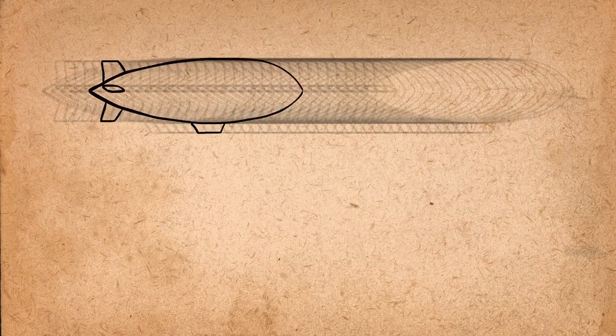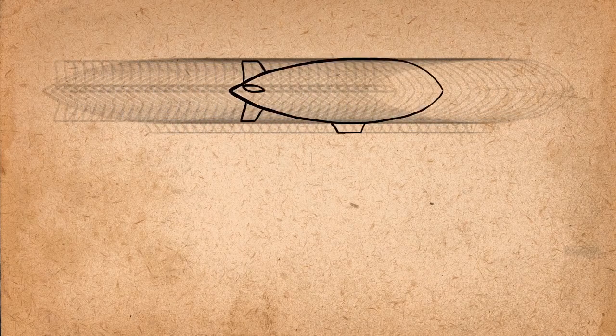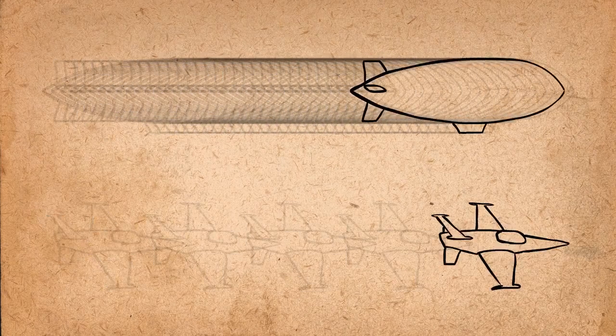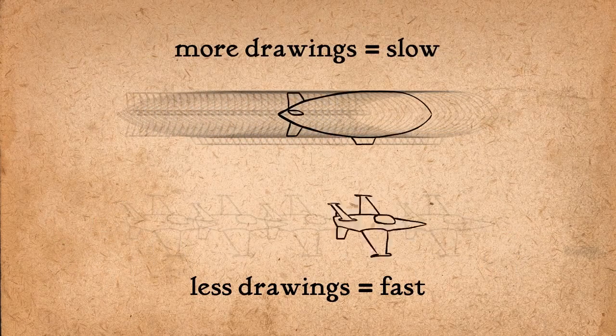Basically, if you have many drawings that are very close together in between the two main poses, the action will be very slow. If you have very few drawings set far apart from each other, the action will be very fast. Less drawings means fast, more drawings means slow.